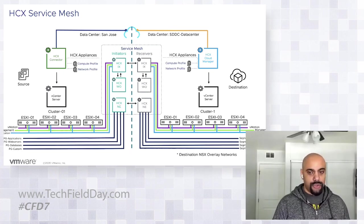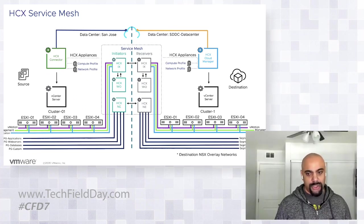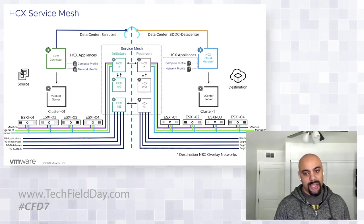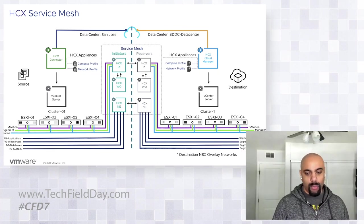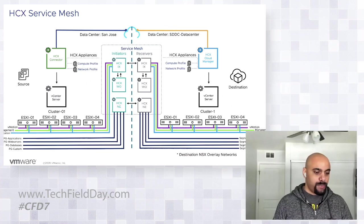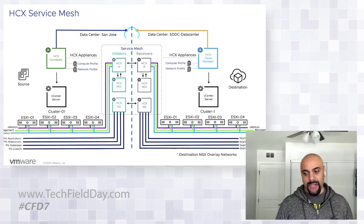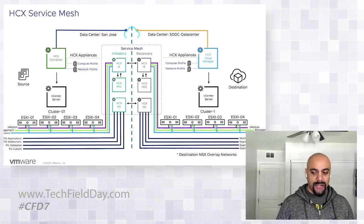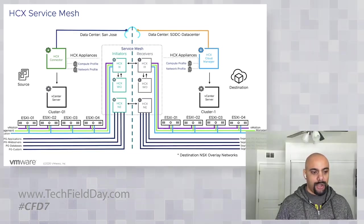Think of the service mesh as a way to group the profiles and deploy the appliances — appliances don't get deployed until you have both a compute and network profile created. The source is the initiator: pairing happens from source to destination, and the destination — in this case VMware Cloud on AWS — is the receiver. When we do the network extensions, source port groups like app, web, DB, and custom get extended to the destination; because we're using NSX-T, it creates segments on the destination side.